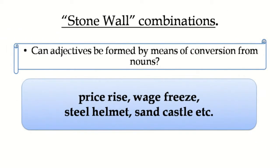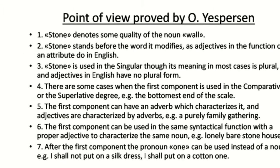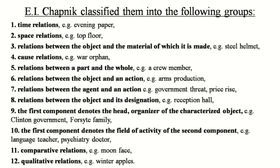One more kind of conversion is stonewall combinations — a combination which consists of two nouns but one of the nouns acts as an adjective. For example, 'price rise', 'wage freeze', 'steel helmet' — in 'price rise', 'price' is a noun but functions as an adjective in that phrase. The following slides present the point of view proved by Jespersen and another classification by Chapnik, who classified them into different groups.